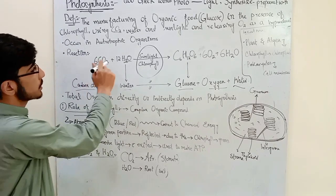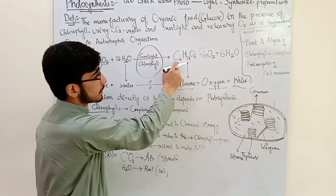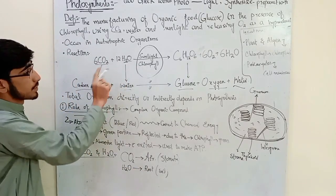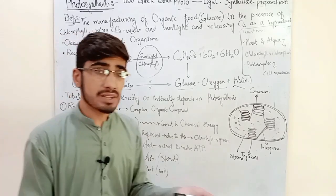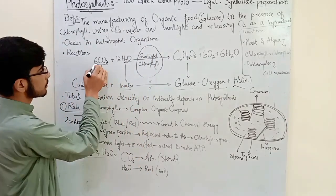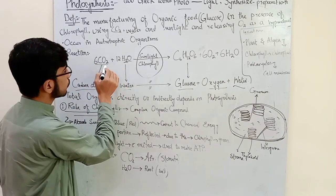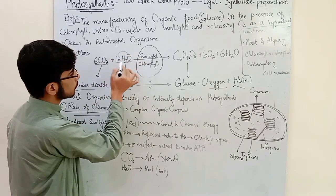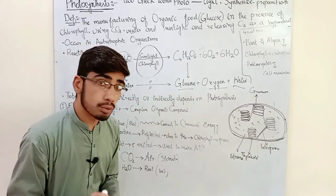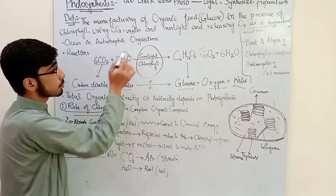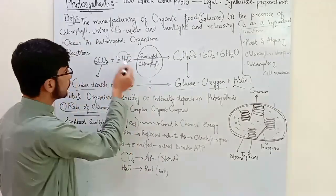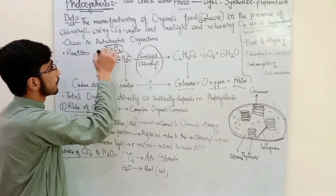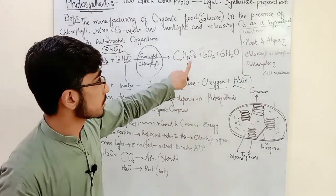Carbon dioxide contributes carbon. The formula used is C6H12O6. When balancing the equation, we balance oxygen. Using 12 molecules of water and 6 molecules of CO2, we balance to get 6 molecules of oxygen released.